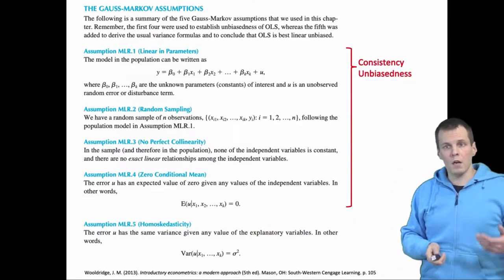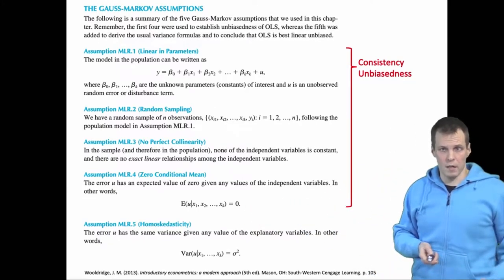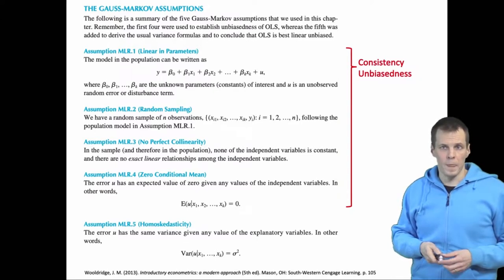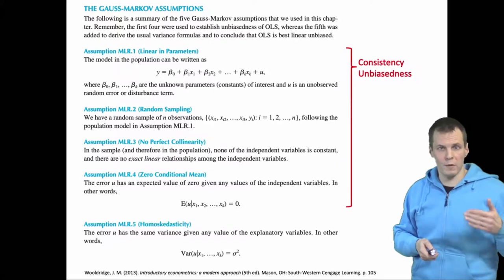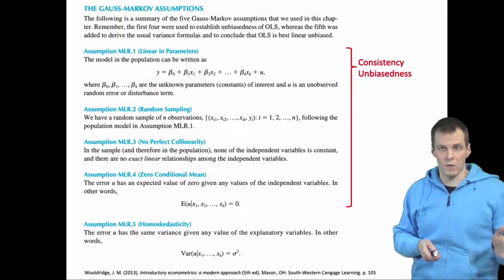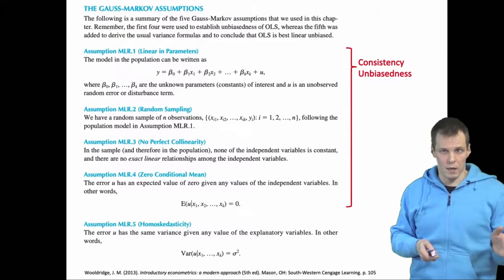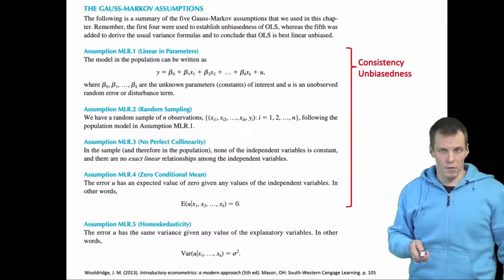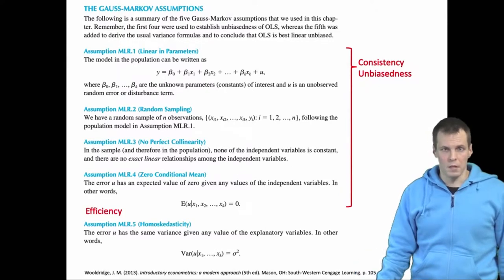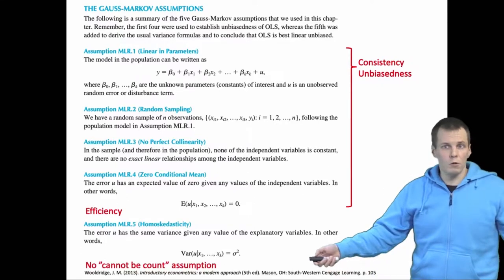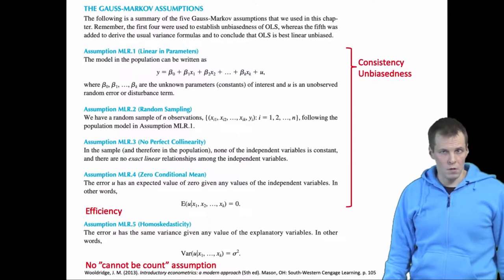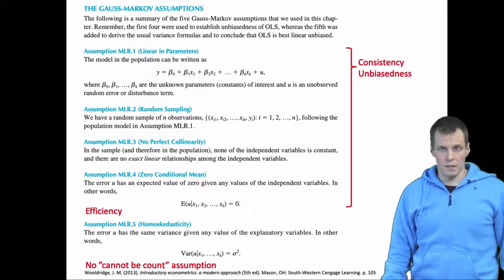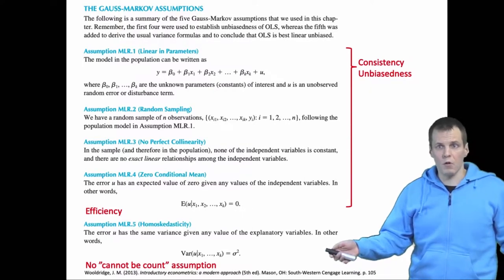We start caring about the distribution of the dependent variable when we consider the efficiency assumption. If you have homoscedastic errors — meaning the variance of the error term doesn't change with the explanatory variables — then regression analysis is also efficient. But again, there is no 'must not be a count' assumption. Using regression analysis for counts is completely fine.